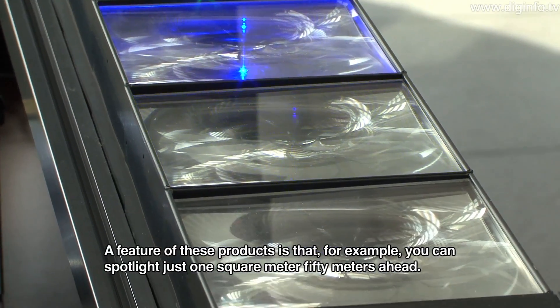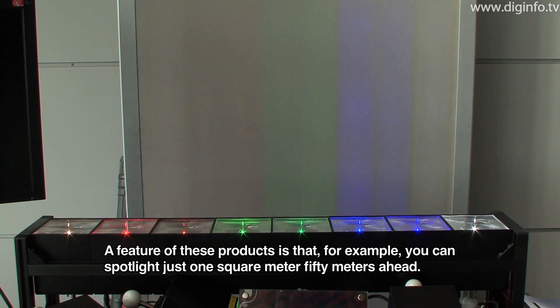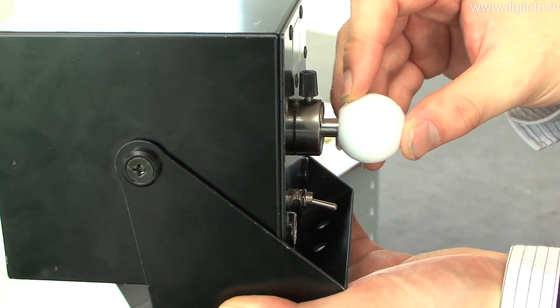For example, the area and angle of illumination can be adjusted by moving the rear ball on the back of the HoloLight.